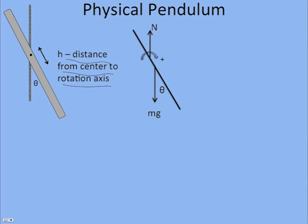If we draw a free body diagram, we have a normal force at the nail, we have mg at the center of mass, and if I sum the torques about the pivot point, about the nail, then normal force doesn't have a torque.